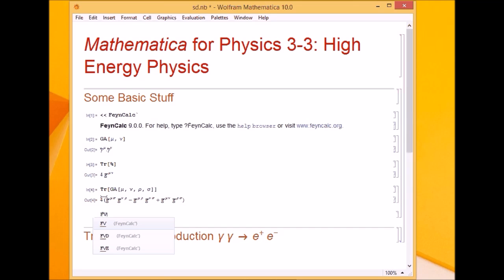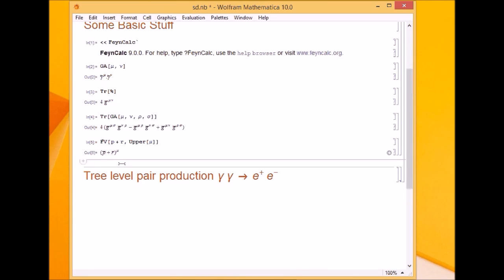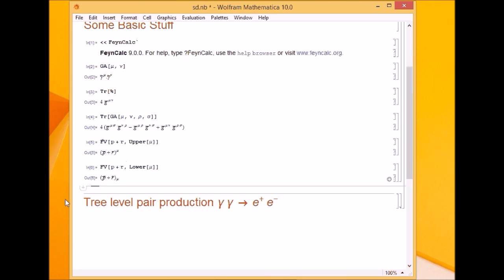If I want to write a four vector, I write FV and then whatever. If I have p plus r, it takes two arguments. The first is what is the four vector and what is the index. I write in this form, either it's upper or lower. If I write upper mu, it gives p plus r and the index is upper mu. If I want the lower thing, I'll write FV, p plus r, lower mu. It came as lower.